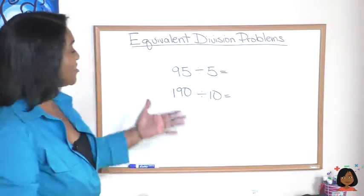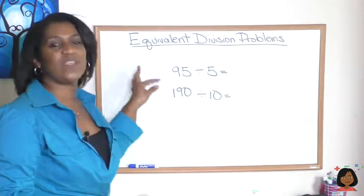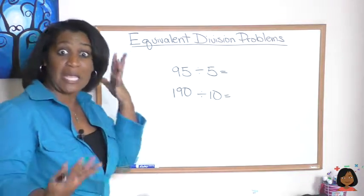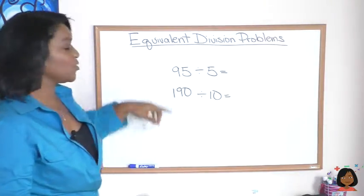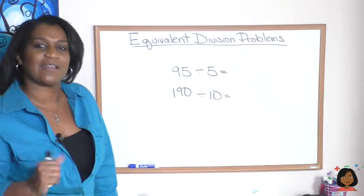Take a look. I've got two division problems here. Your job is to tell me which one of these is easier to do mentally, meaning in your head. Is it the first one, 95 divided by 5, or 190 divided by 10?